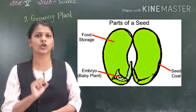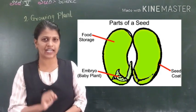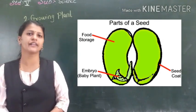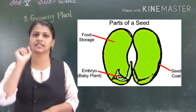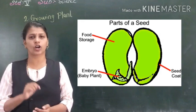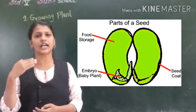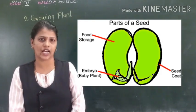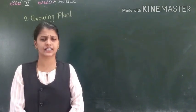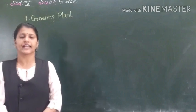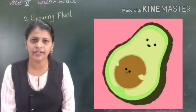The seed coat has a tiny hole. Because of that tiny hole, the baby plant can get air and water. The seed coat also has a scar, which is where the seed was attached to the plant. Along with the seed coat, there are seed leaves, also called cotyledons. The cotyledons store food for the baby plant.